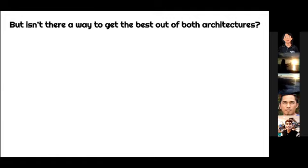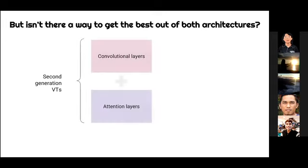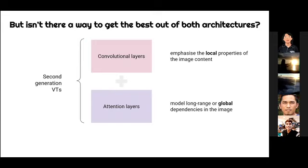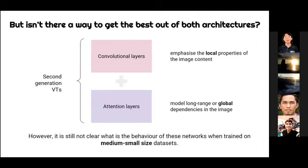Anyway, so in order to alleviate this problem, very recently, a second generation of VITs has been independently proposed by different groups. So a common idea behind these works is to mix convolutional layers with attention layers. So in such a way that we are providing a local inductive bias to the vision transformer. So this hybrid architectures enjoy the advantages of both the paradigms. So the convolutional operations can emphasize the local properties of the image content. And the attention layers, on the other hand, can model long range dependencies or capture global information in the image. So however, it is still not clear what the behavior of these networks are when trained on medium small size data sets.